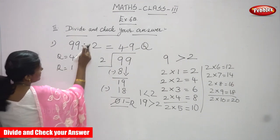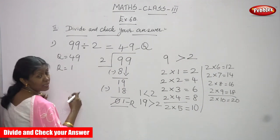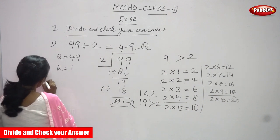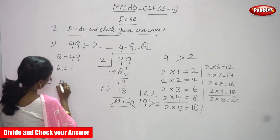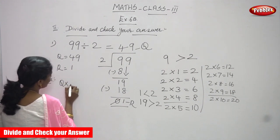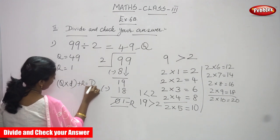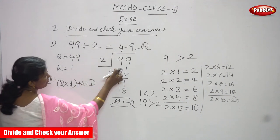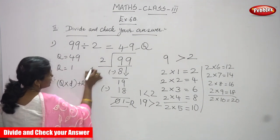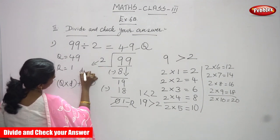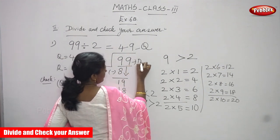Now division is over. Check your answer using the formula: Quotient × Divisor + Remainder = Dividend. The capital D is the dividend and the small d is the divisor.